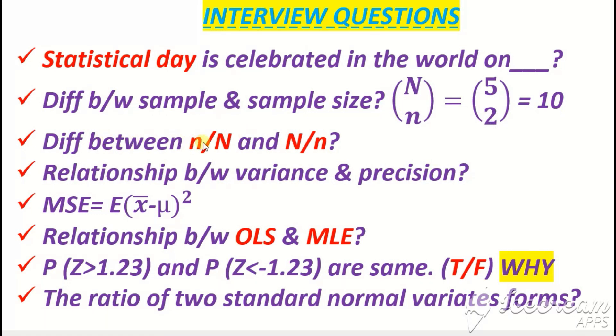What is the difference between n over N (small n over capital N) and capital N over small n? This is called sampling fraction. It means that your sample size must be at least five percent of your population.